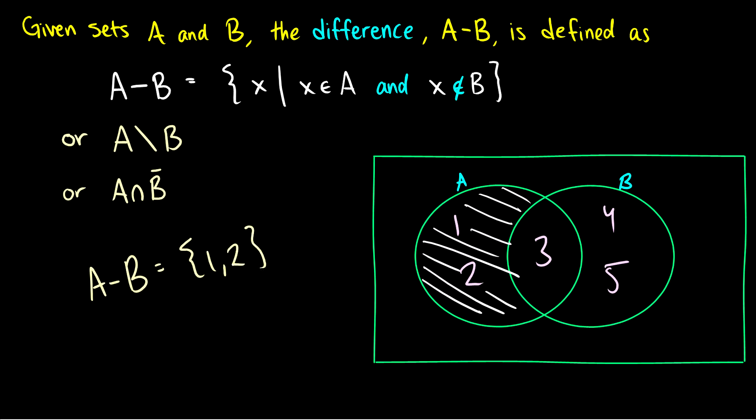So I like the minus symbol for this mainly because it's kind of exactly what it says. You take everything in A and then you subtract whatever is in B. So A contains 1, 2, 3, B contains 3, 4, and 5.